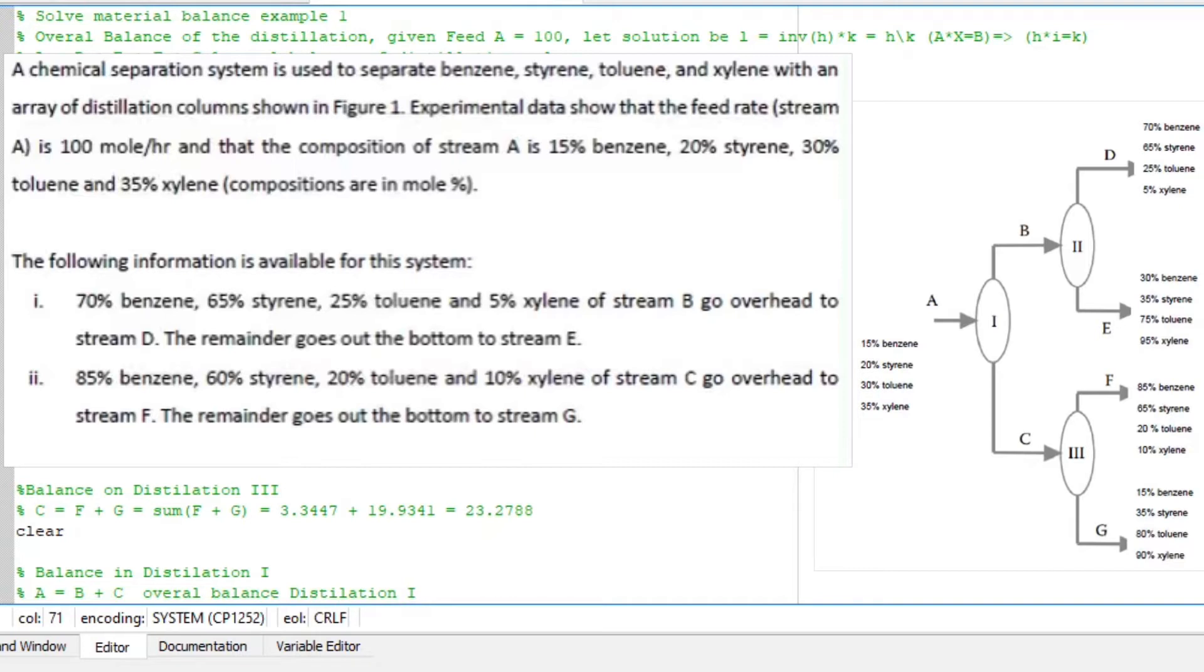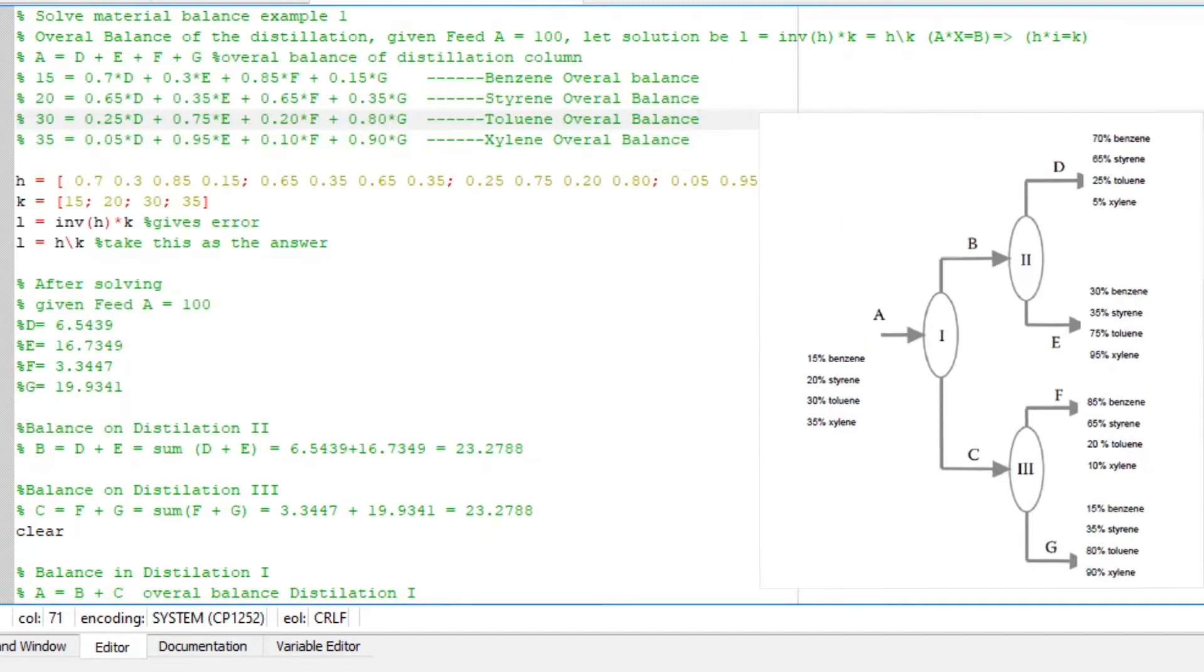We are given the compositions of D and we are told the remainder will go to E. We are also given the composition of F and we are told the remainder will go to G.